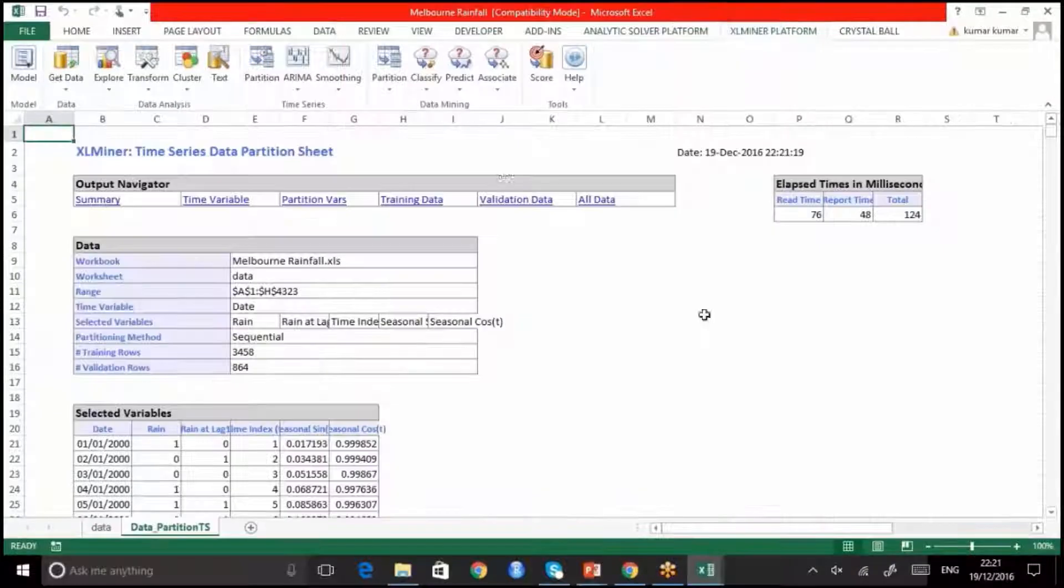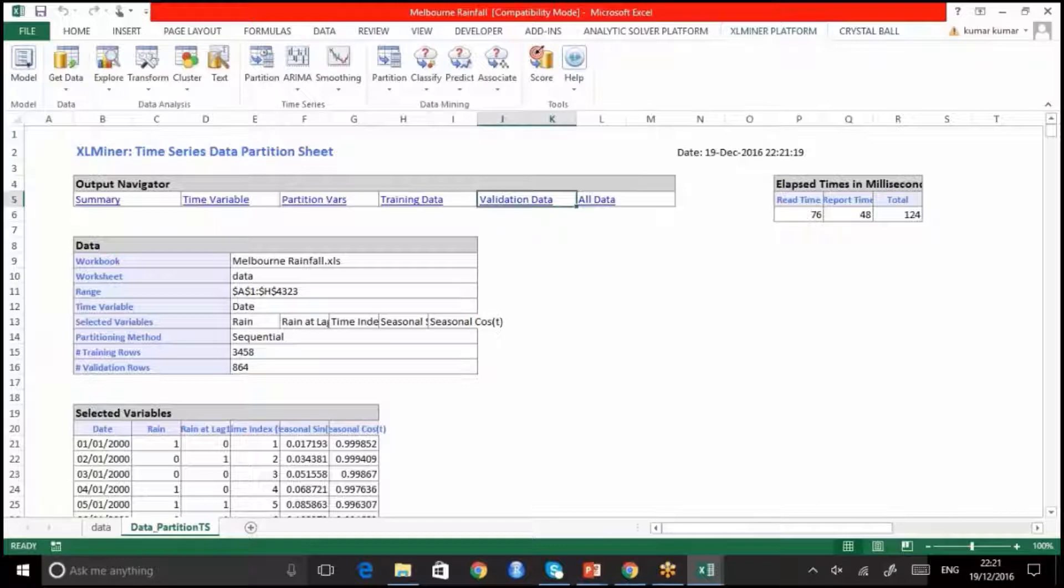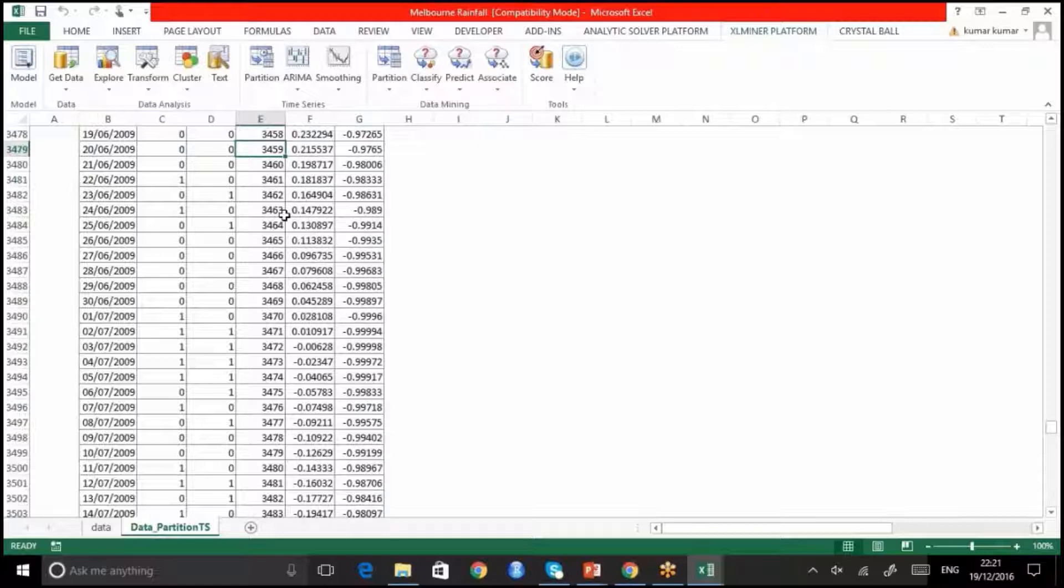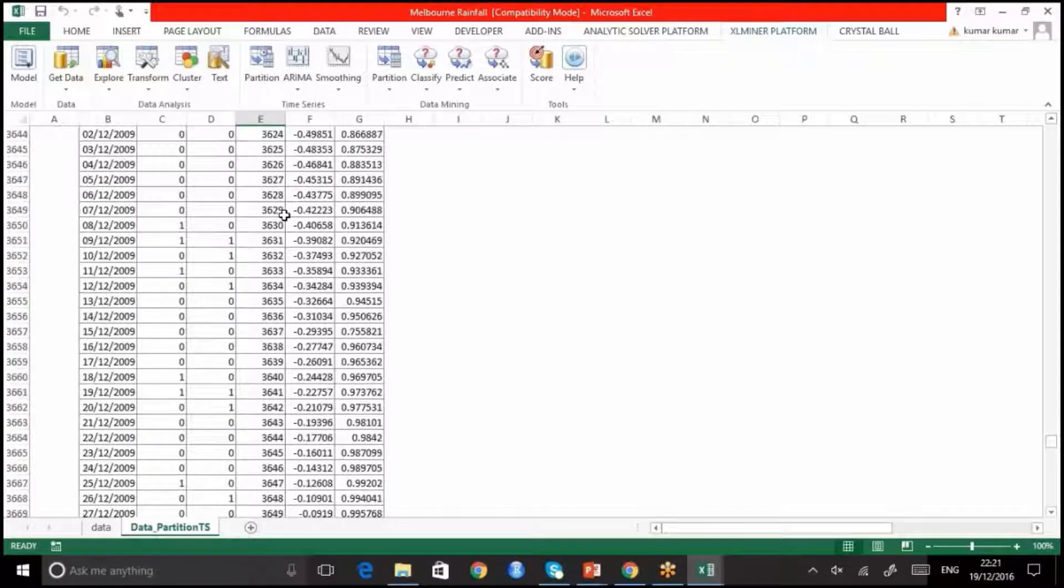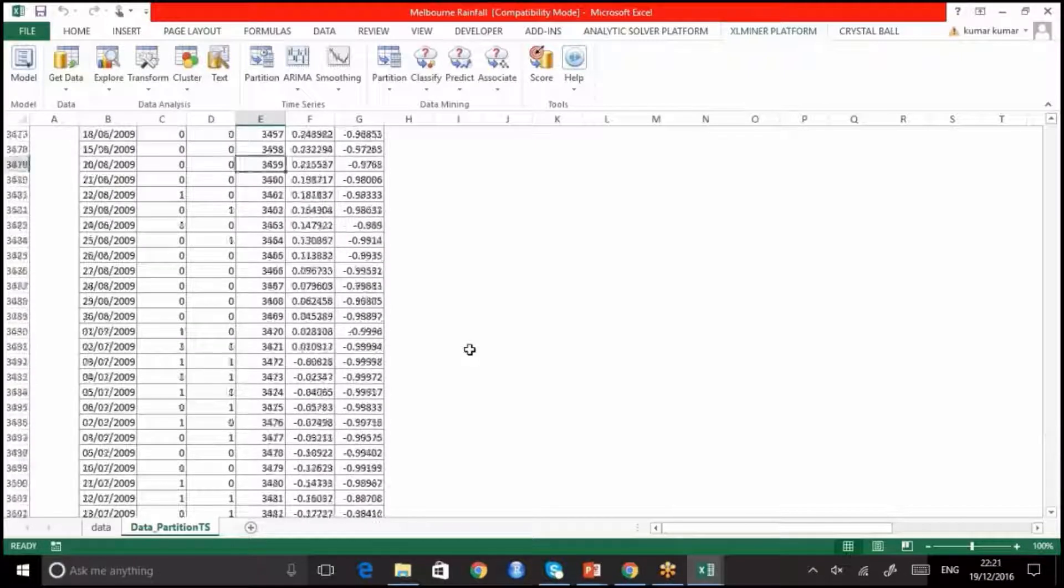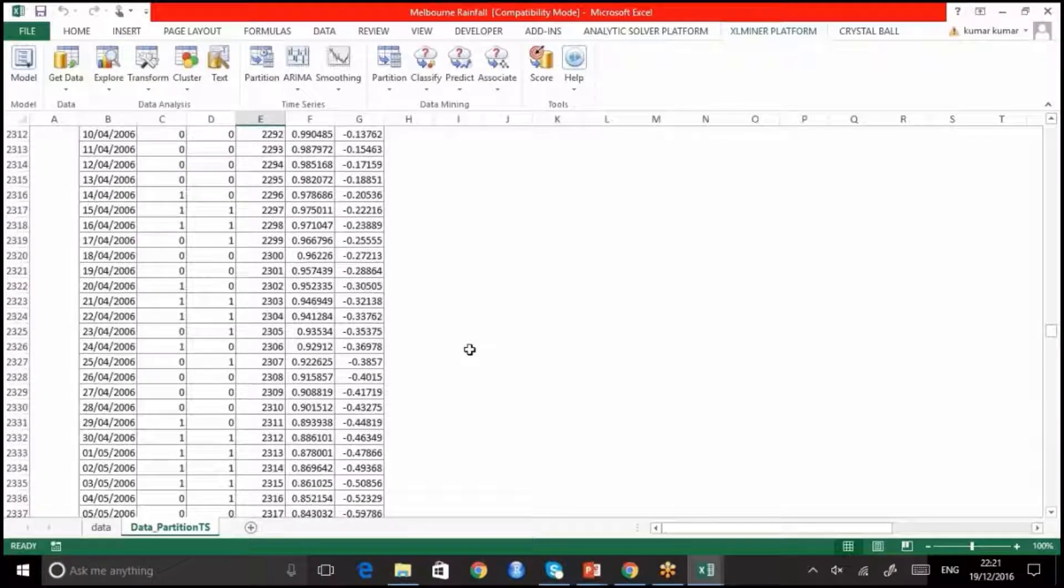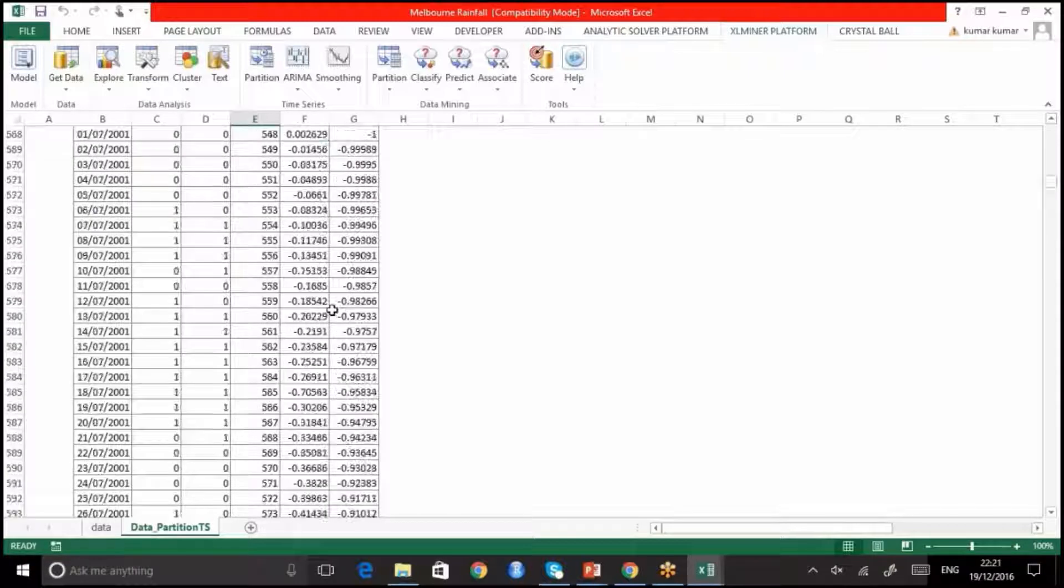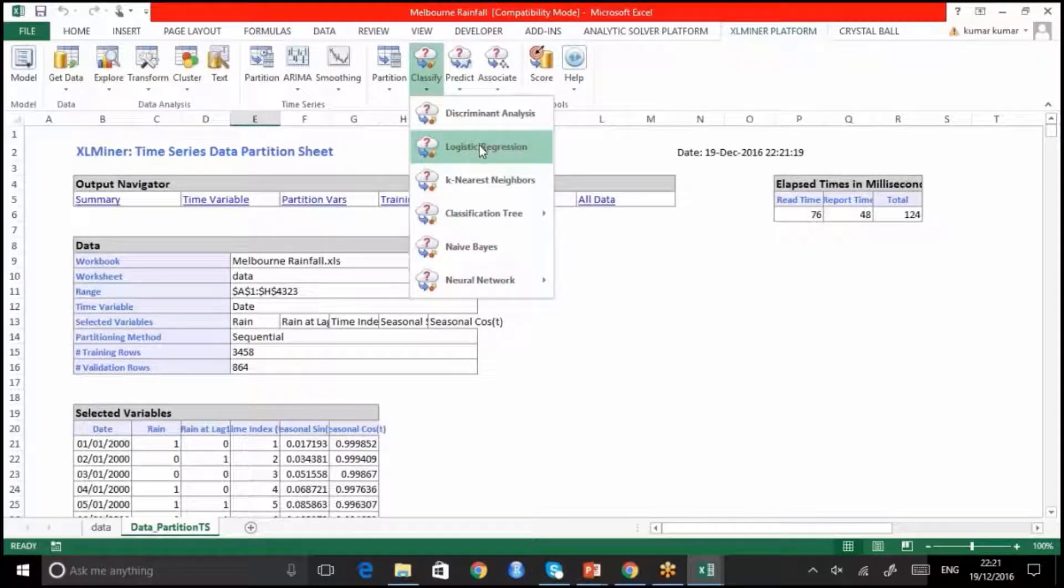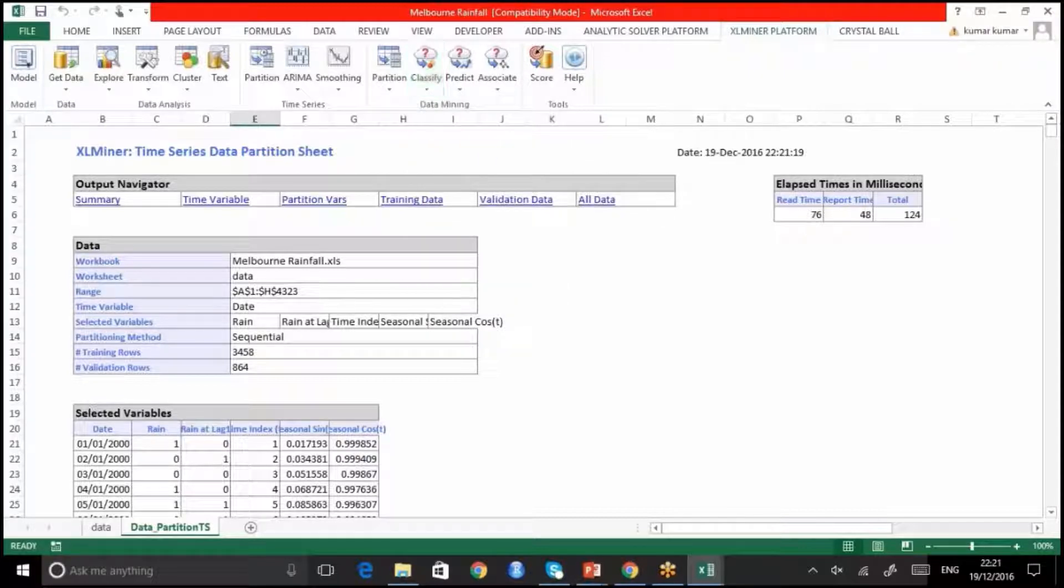Once we have, let me click on validation data. So what we have to do now is we have to build logistic regression. All we need to do is go to predict here or rather classify. And here you have an option called logistic regression. So let us click on that logistic regression.